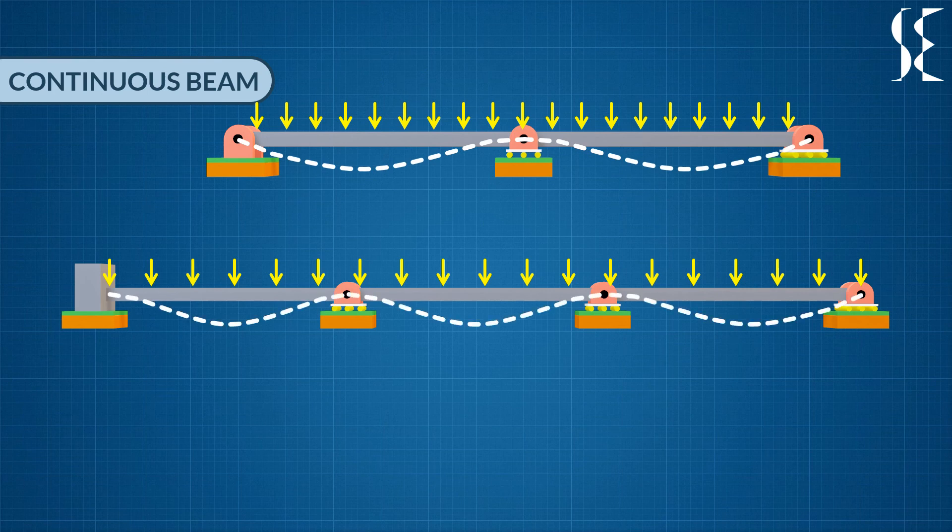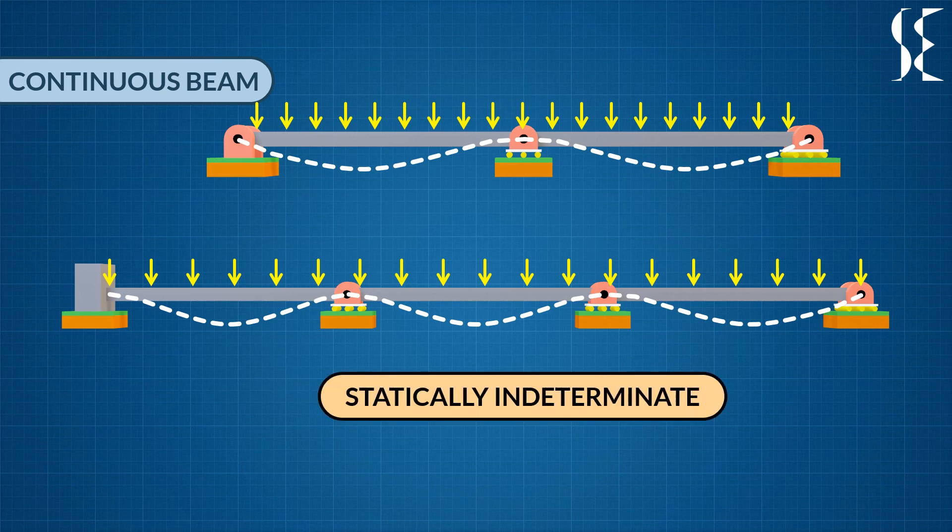The point to be noted here is that the intermediate support will not allow rotation of the beam. Hence, there will be some amount of bending moment present at that support. As the unknown reactions in the continuous beams are more than 3, the reaction cannot be statically determined.